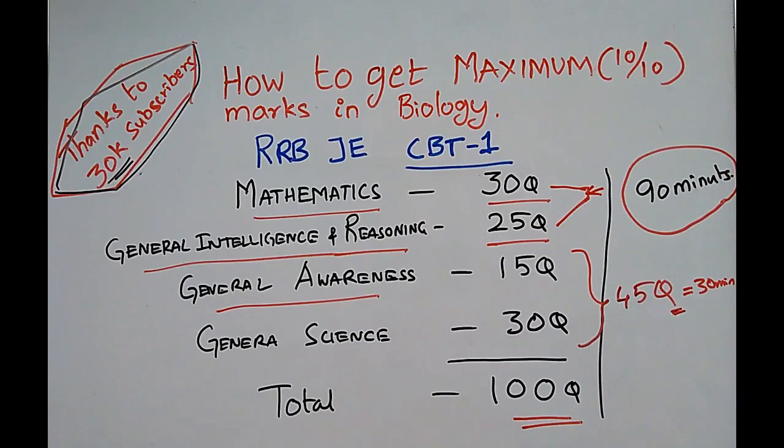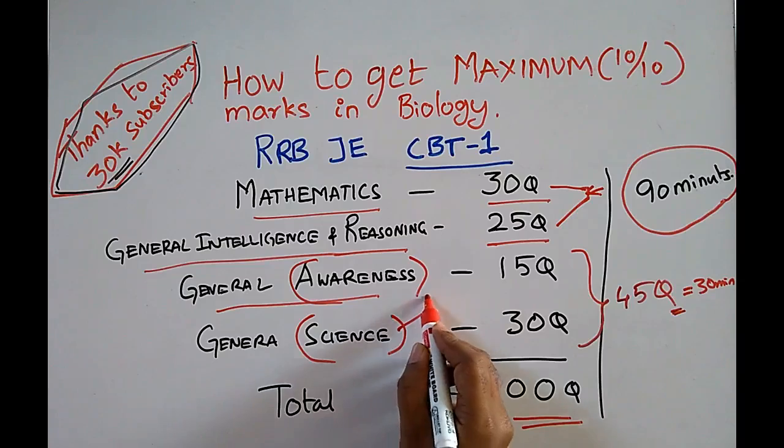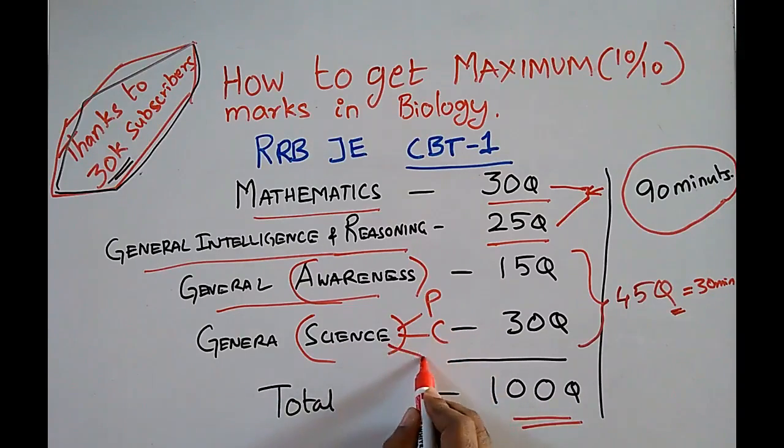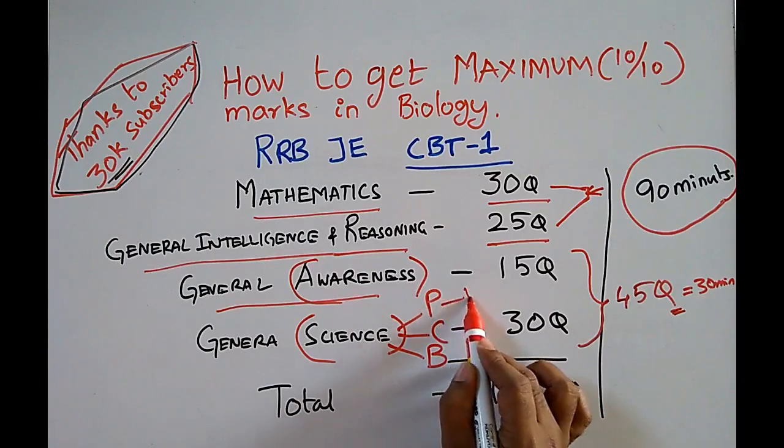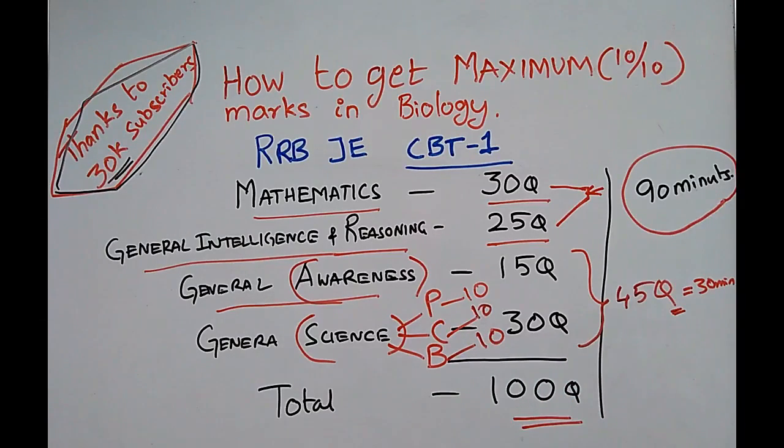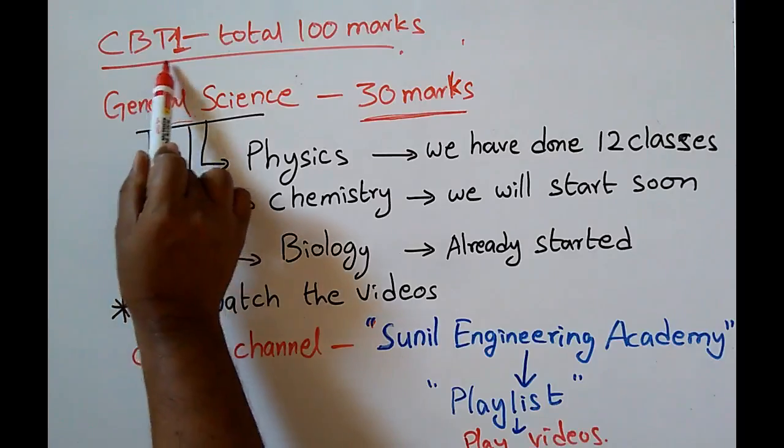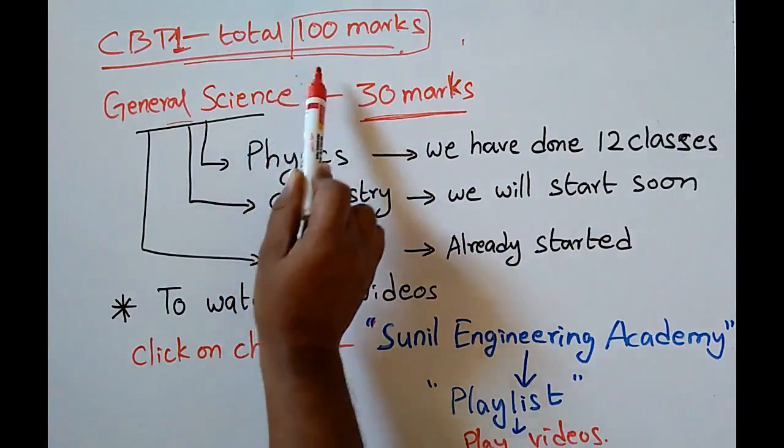There are two general topics: general awareness and general science. General science is nothing but physics, chemistry, and biology. In physics you will get 10 marks, chemistry 10 marks, biology 10 marks. Most of you people who are engineers or diploma students attempting RRB JE will be familiar with physics and chemistry but not biology. So I am going to tell what topics to study in biology to score maximum marks in CBT-1.